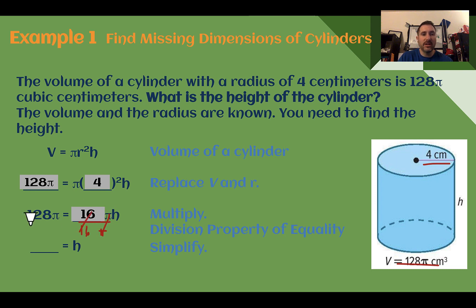Those will cancel out. Dividing by 16 and by pi. The pi symbols cancel right away. Simplify out. 128 divided by 16 is 8. So the height of this cylinder would be 8.